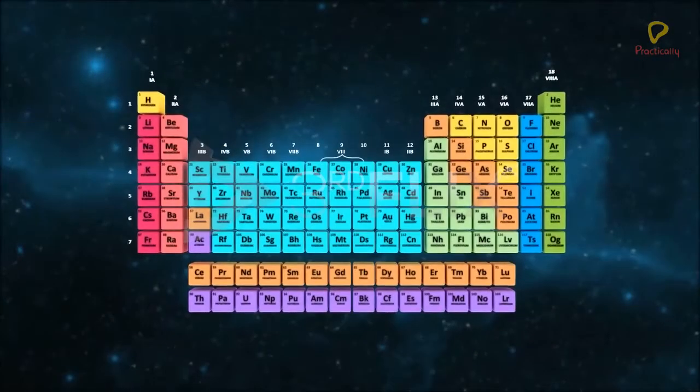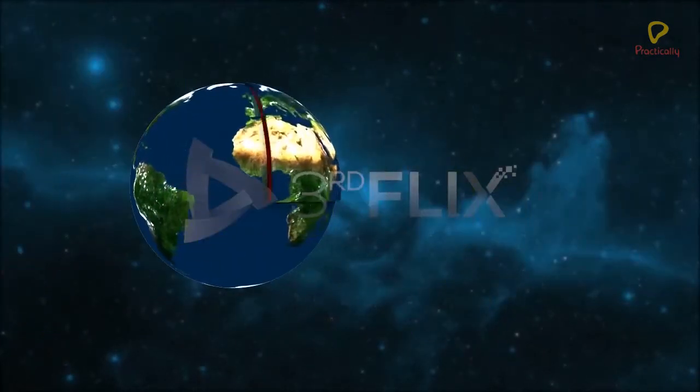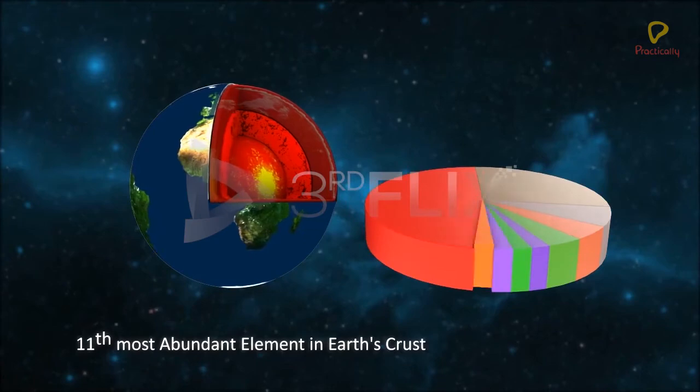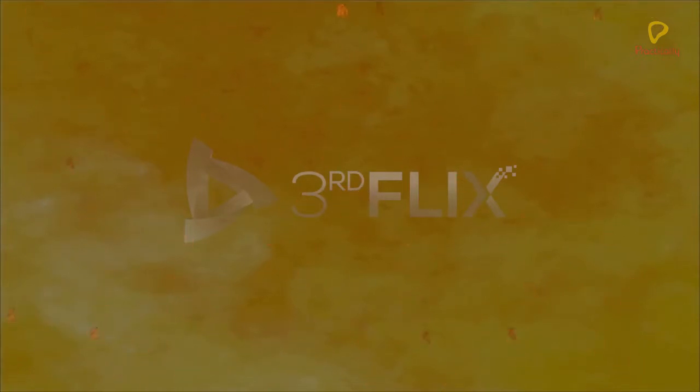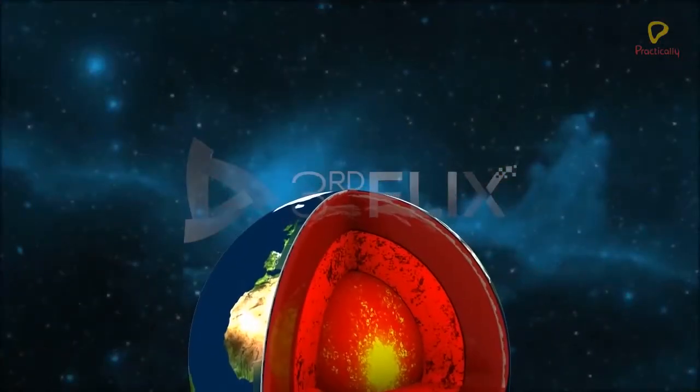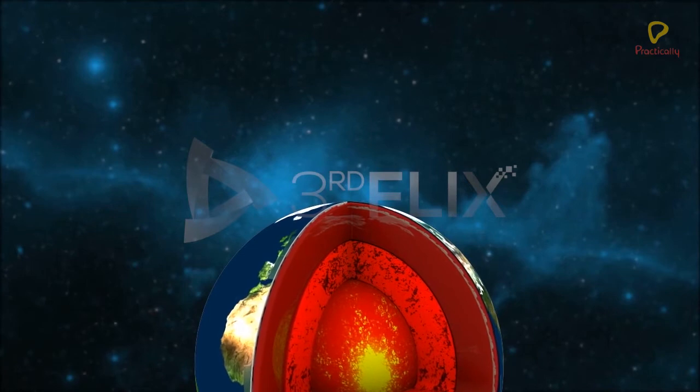The next element in the group is Phosphorus. Phosphorus is the eleventh most abundant element in the Earth's crust. Due to its high reactivity, phosphorus does not occur in free state. In combined state, it occurs in the form of minerals as phosphates.